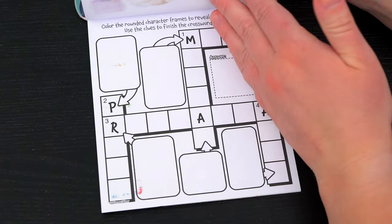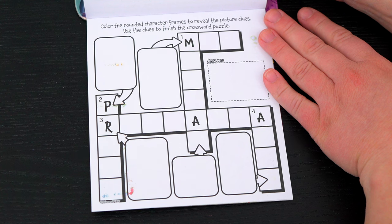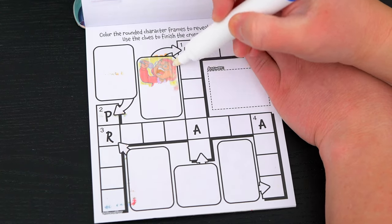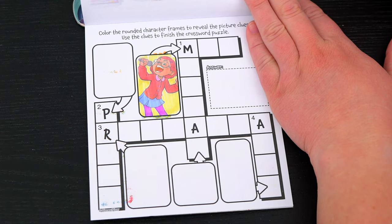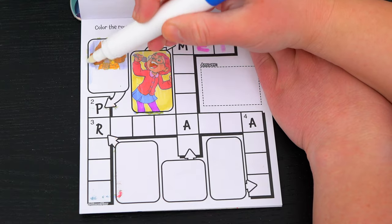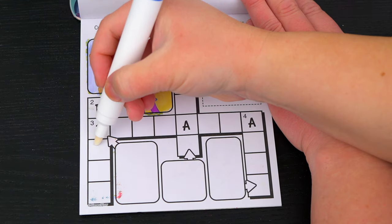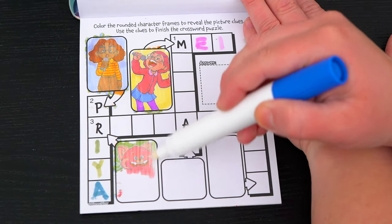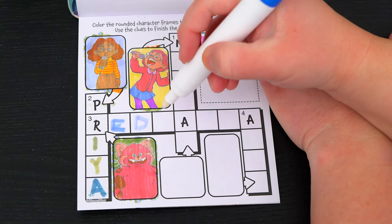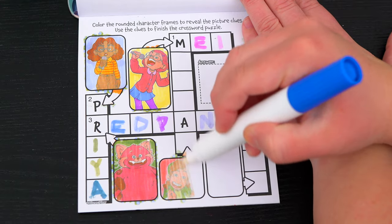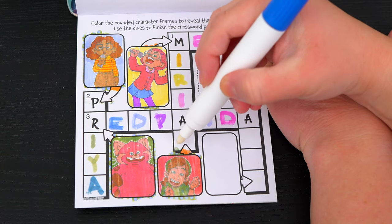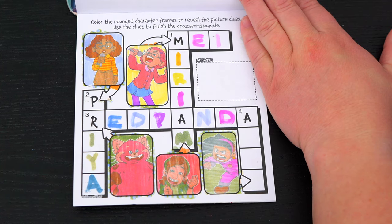Color the rounded character frames to reveal the picture clues. Use the clues to finish the crossword puzzle. Okay, first we'll start here. It's Mei! And next let's color in this one. That's Priya! Ooh, this one's Red Panda! And that one's Miriam! And the last one is Abby!